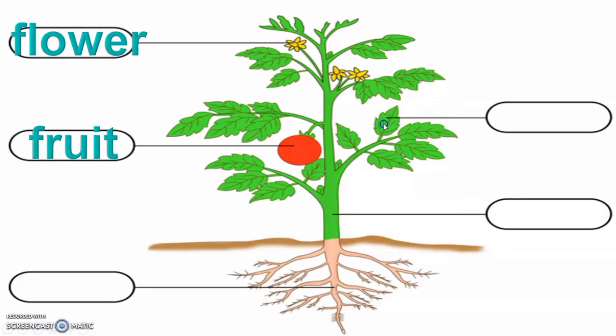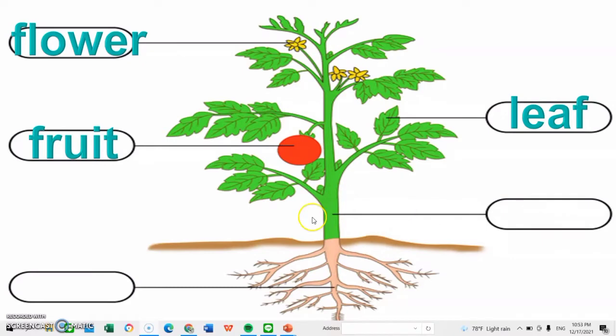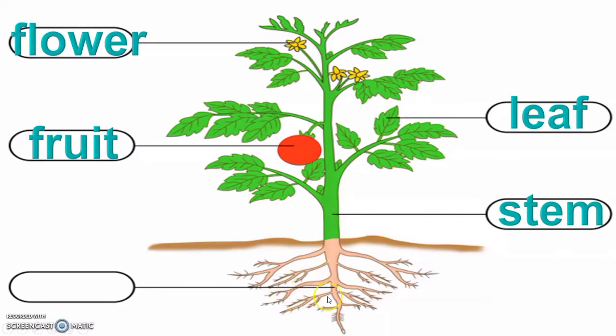How about this one? Very good. Leaf. What is this? Very good. This is stem. And the last is, what is this? Root. This is root. Okay. Again, from the start, this is flower. F-L-O-W-E-R. Flower. Next is leaf. L-E-A-F. Leaf. Next is fruit. F-R-U-I-T. Fruit. Next is stem. S-T-E-M. Stem. And the last is root. R-O-O-T. Root.